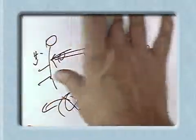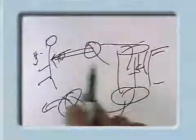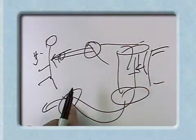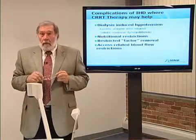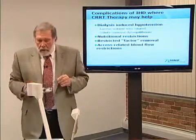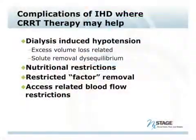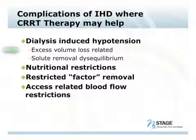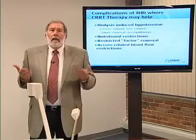All of these complications are true in both intermittent and continuous therapy, and each area needs to be addressed and followed. Moving from generic complications to specifics, with intermittent forms of therapy, probably the biggest complication is hypotension. This can be induced from volume-related issues — trying to remove too much volume over too short a period of time — or solute-related issues, where you're removing a large amount of solute over a short period of time with back diffusion of material from the dialysate.